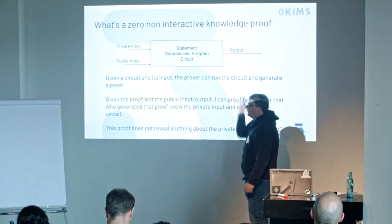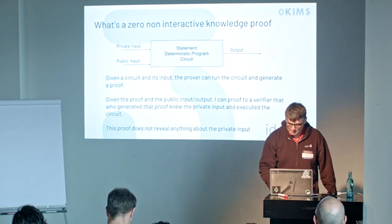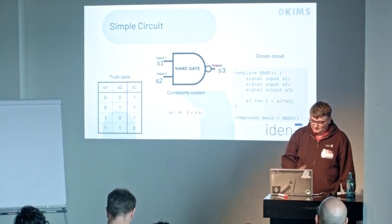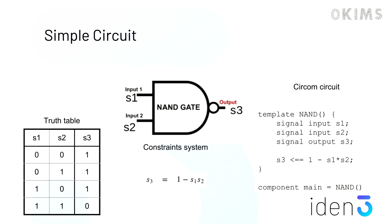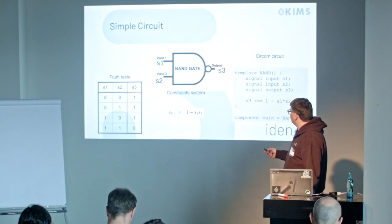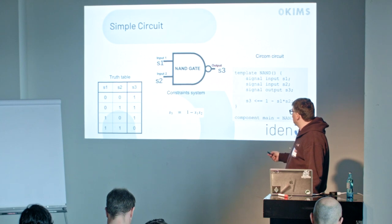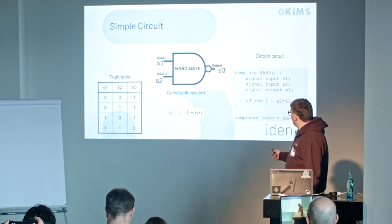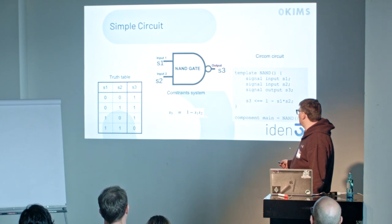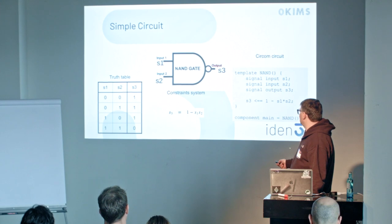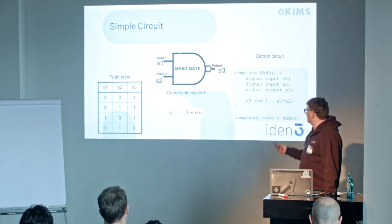So how do we write those circuits? Let's start with a very simple circuit — a NAND gate. Here you can see the truth table. Depending on the input signals you have a specific output. The interesting thing is that this can be converted to a constraint system. We have only three signals, and whatever output we have, we need to find S1 and S2 that follow this. If S1 or S2 equals 1, then 1 minus 1 is 0, so S3 is 0. If S1 or S2 is 0, then 1 minus 0 is 1, and this fits — that's the constraint.